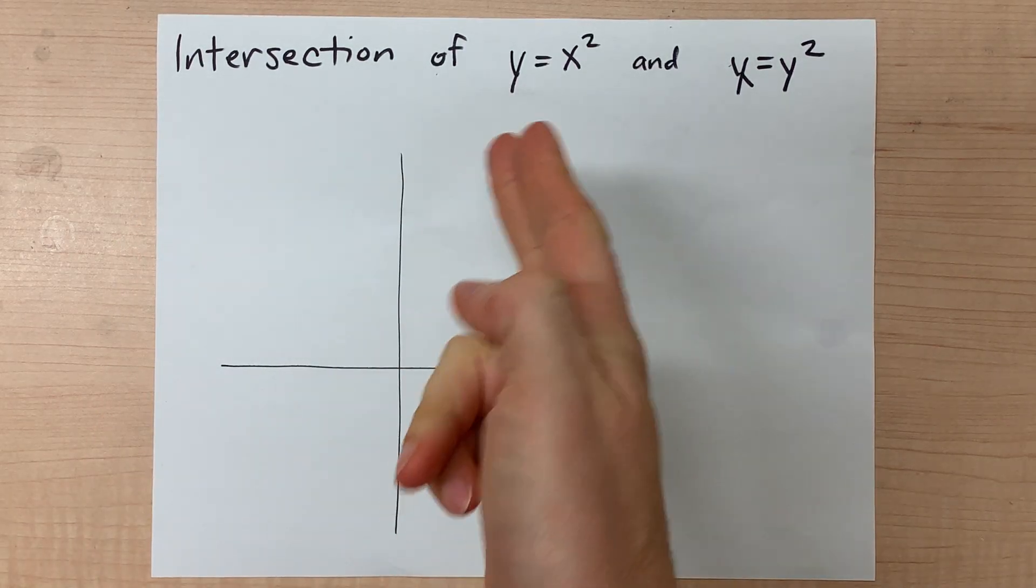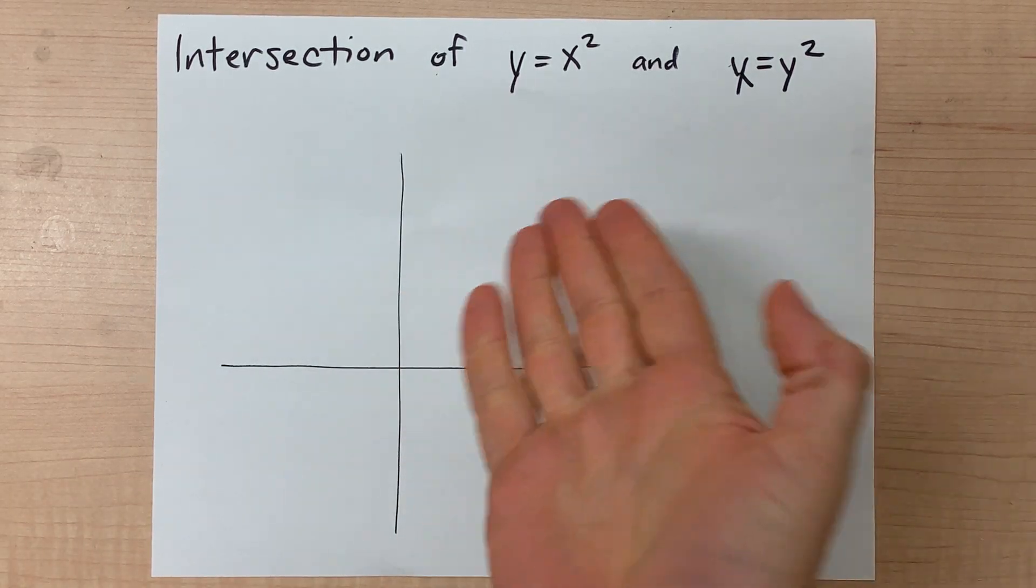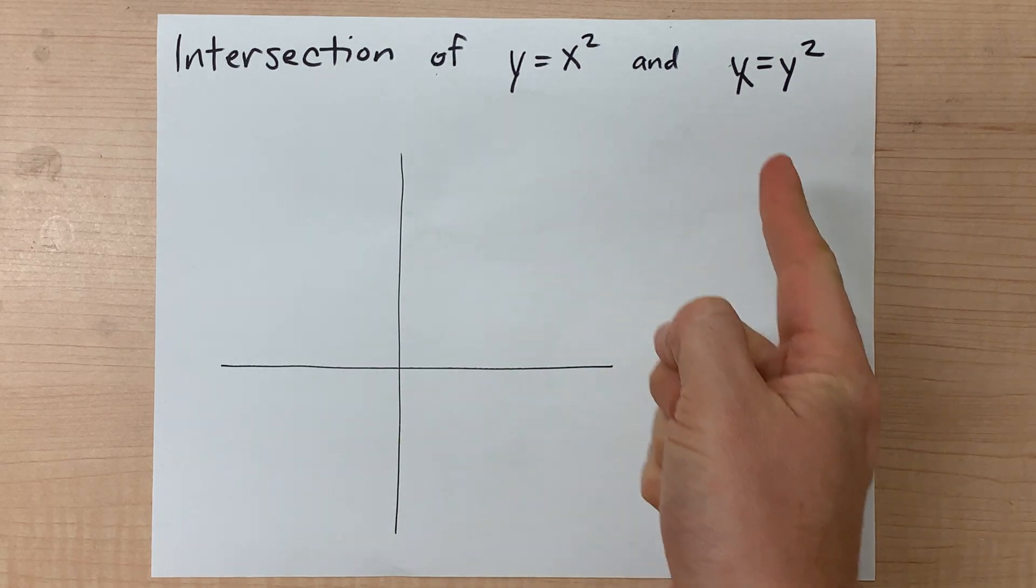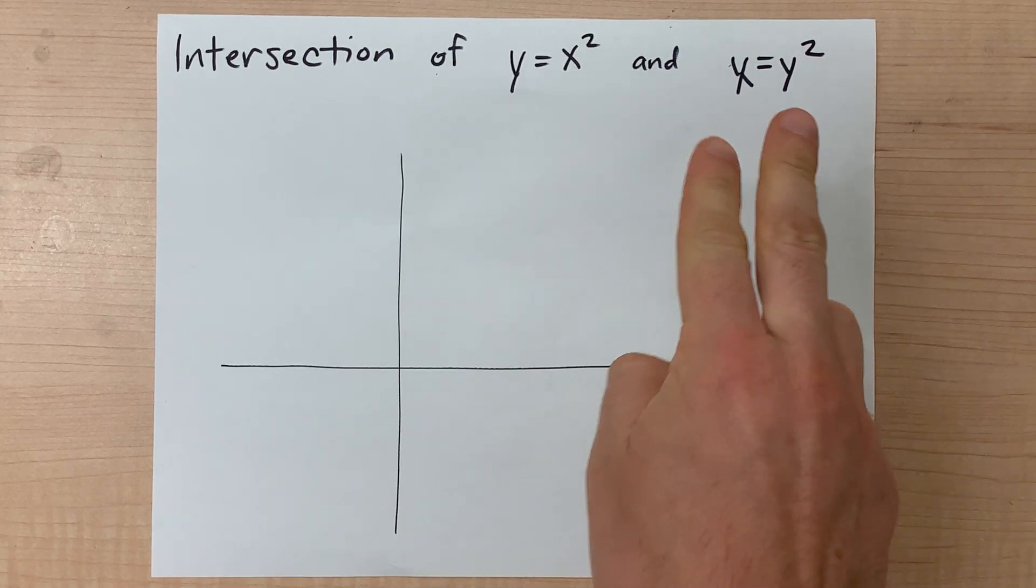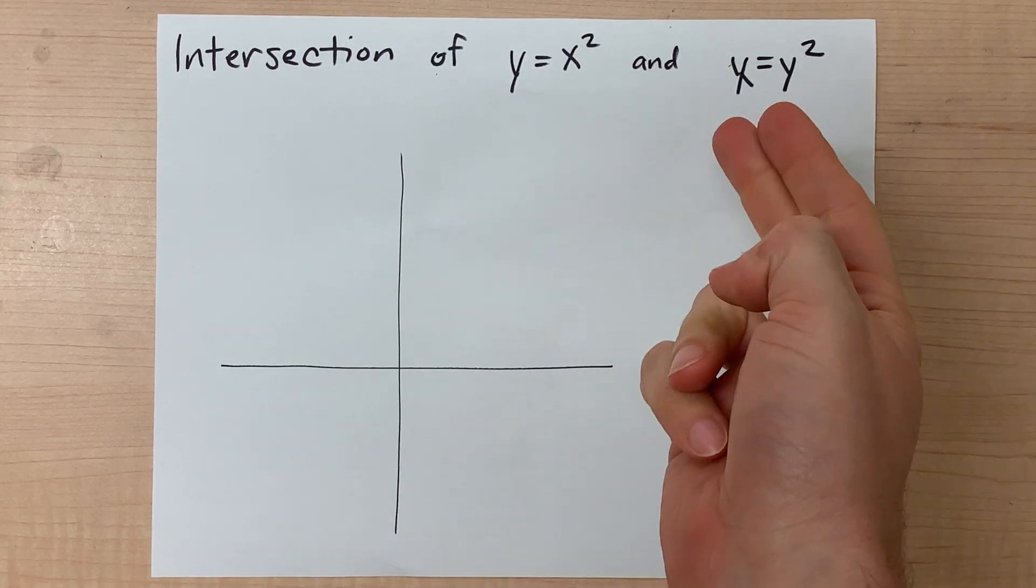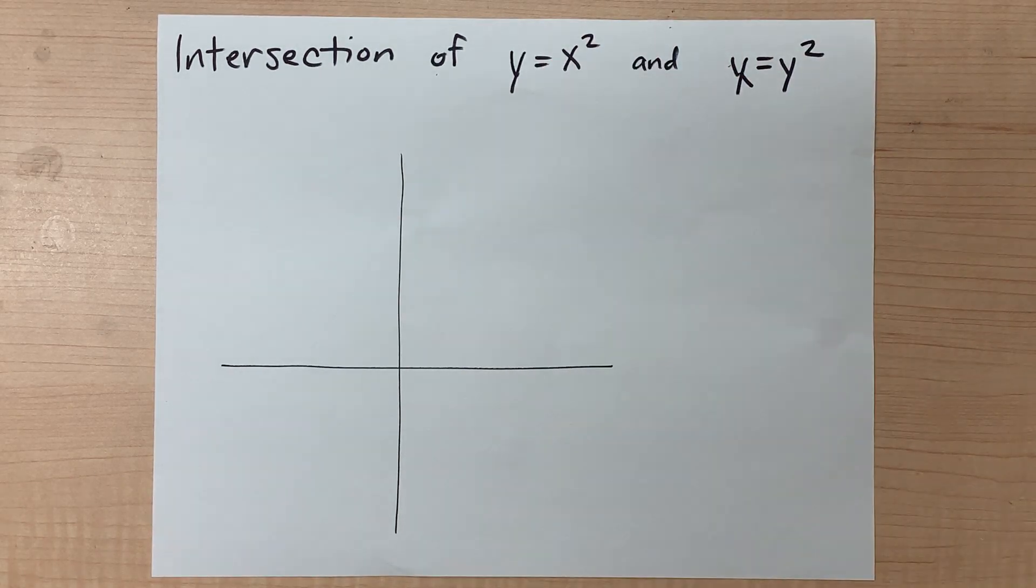We're going to find the intersection of y = x², which is a regular parabola, and x = y², which you'll notice is the same equation but with x and y flipped. This is actually the inverse of that.